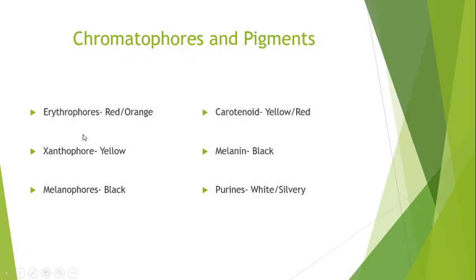So the chromatophores are of the following types. The first is erythrophores which provides red or orange color, then xanthophores which provide yellow color, and then melanophores which provide black color. So these are the chromatophores which contain different types of pigments. Other colors like blue, green, brown are due to the mixing of three kinds of chromatophores, mixed in different proportions to produce different colors in fishes.